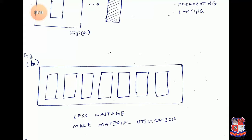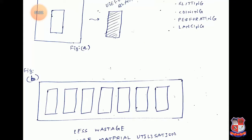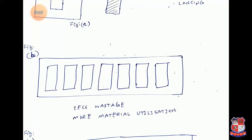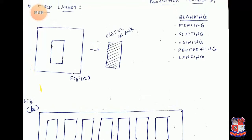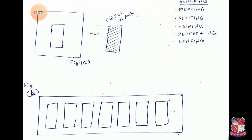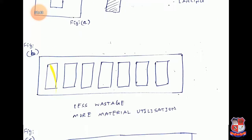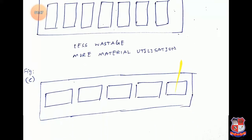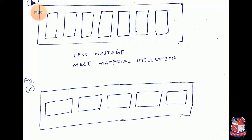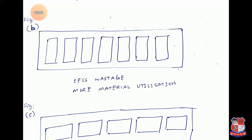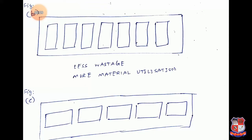What we want to do is reduce the wastage — in other words, reduce the scrap. Consider figure B: if we want to mass produce rectangular blanks, we can use a long strip and arrange the rectangular blocks on it such that there is less wastage and more material utilization. This arrangement is called a strip layout. Looking at figure C, the same blanks are arranged horizontally. For the same length, figure C gives five blanks, while figure B gives around seven. So the layout is very important for maximum material utilization.